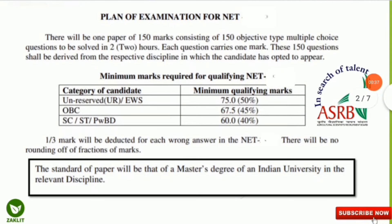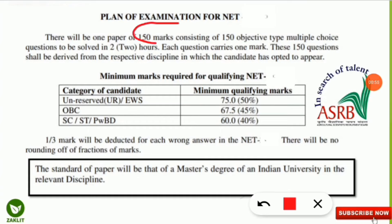A question that is asked many times is how many questions you should attempt. Total of 150 objective type multiple choice questions will be given and we have to solve them in two hours. The minimum qualifying marks for the unreserved and EWS category is 75 marks, that is 50% of total marks. For OBC it is 67.5 marks, and for SC/ST/PWBD it is 60 marks.